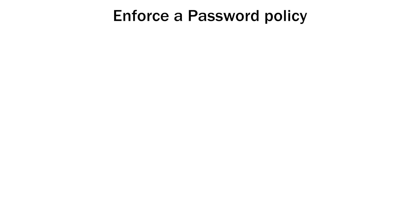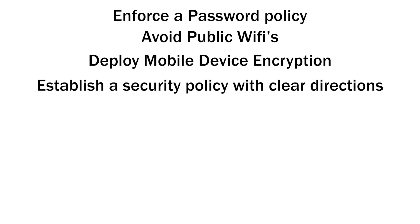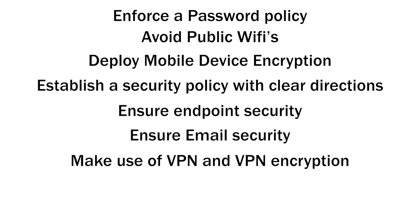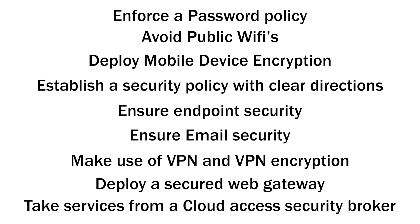How do you enforce mobile security? First, enforce a password policy. Second, avoid public Wi-Fi. Third, deploy mobile device encryption. Fourth, establish a security policy with clear directions. Fifth, ensure endpoint security. Sixth, ensure email security. Seventh, make use of VPN and VPN encryption. Eighth, deploy a secure web gateway. Ninth, take services from a cloud access security broker.